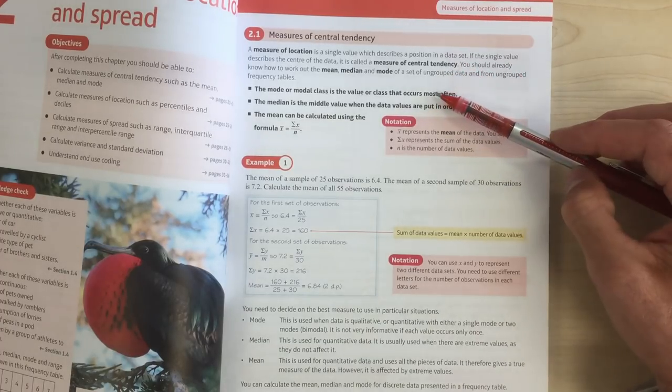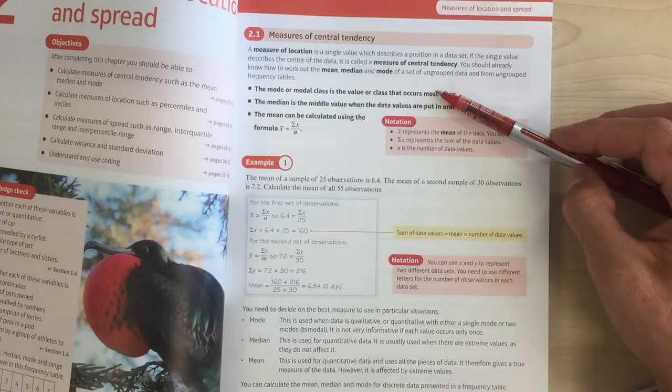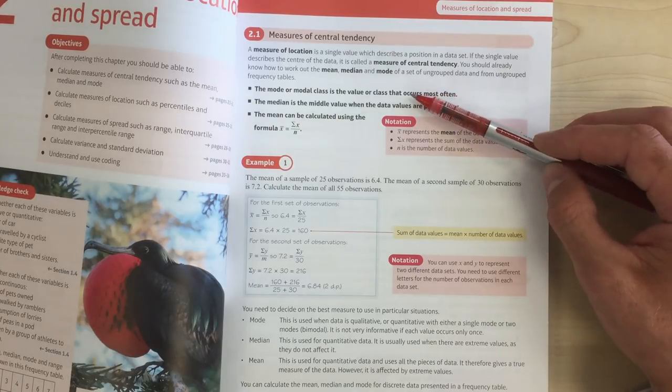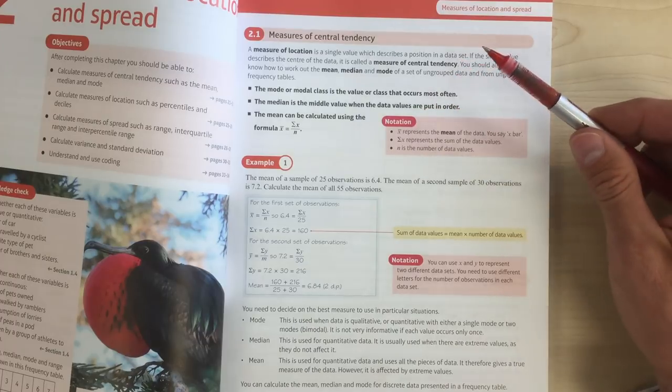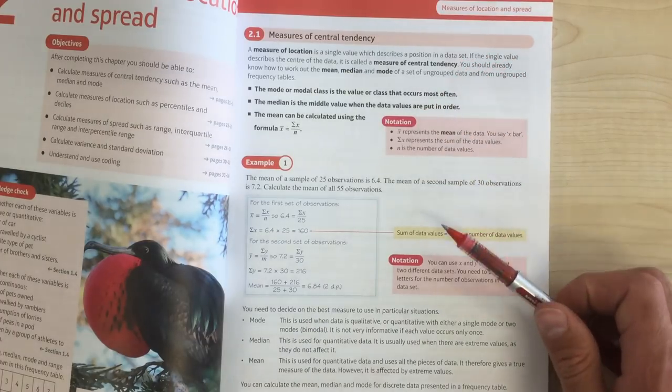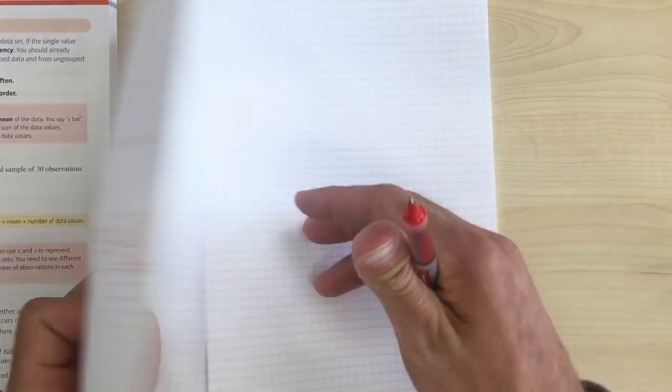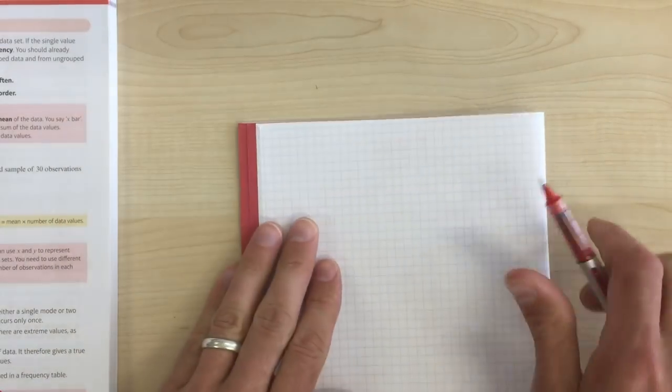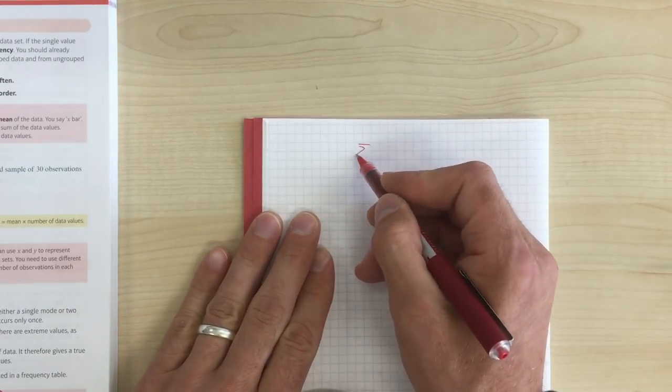And we've seen before finding mean, I hope we've seen before finding mean from a frequency table, finding modal class and medians from frequency tables and that sort of thing. So I'm not going to go through that lot. If you need a revision of it, then it's worth having a look through a GCSE revision guide or something like that.